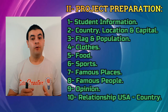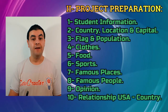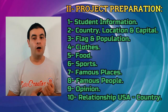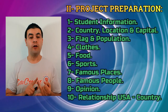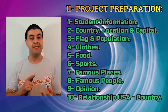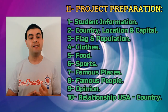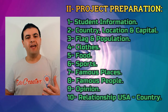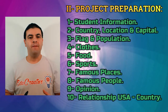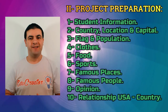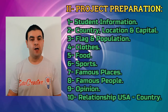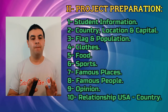Slide three: the flag presentation and the population. Slide four: clothes in that country. Slide five: food in that country. Slide six: sport in that country. Slide seven: famous places in that country. Slide eight: famous people from that country — they can be athletes, actors, or singers. Slides nine and ten: slide nine is your own opinion about the country, and slide ten is the relationship between the United States and that country.